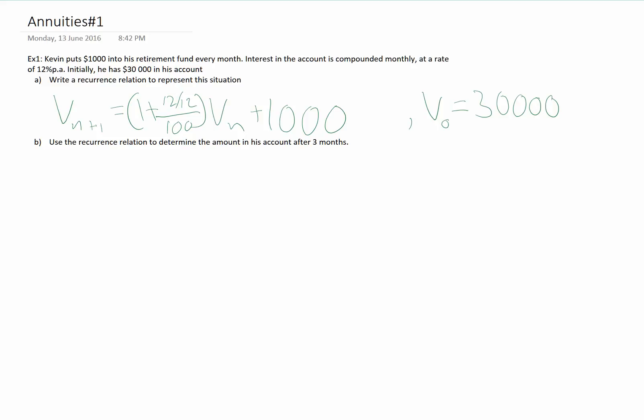Use the recurrence relation to determine the amount in his account after three months. So, I'll just rewrite it again here. Vn+1 equals... This simplifies to 1.01 Vn plus 1,000.